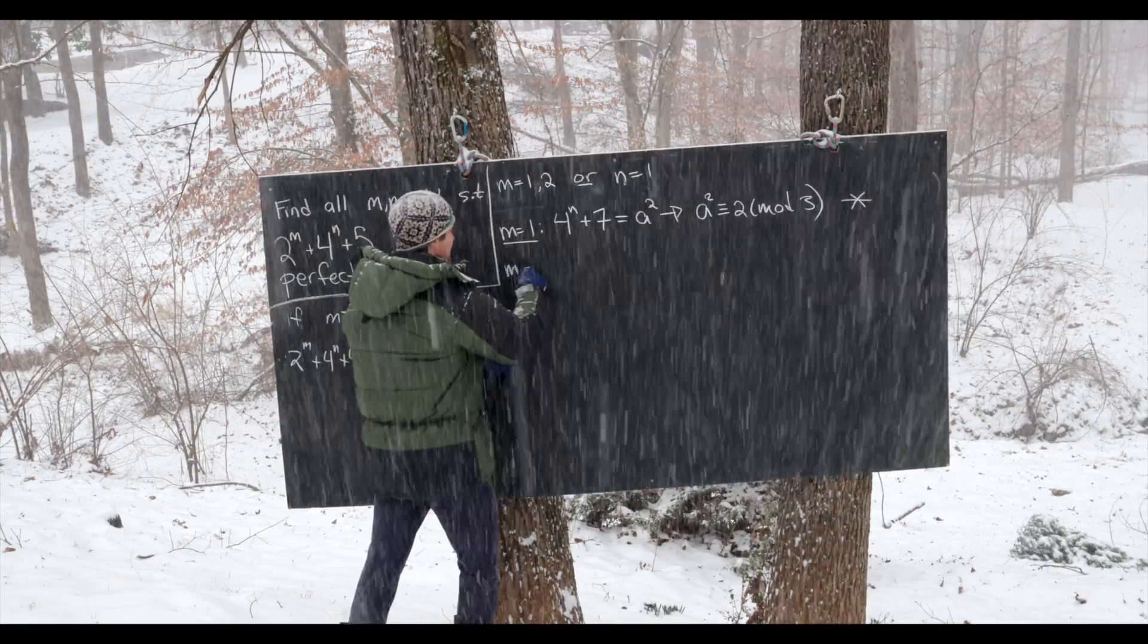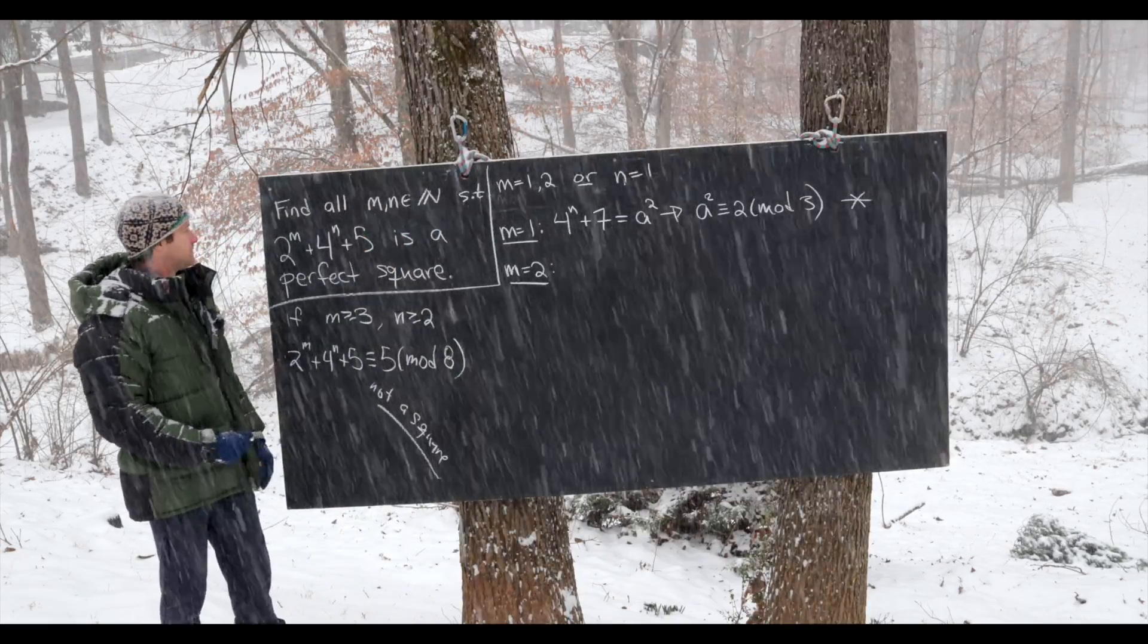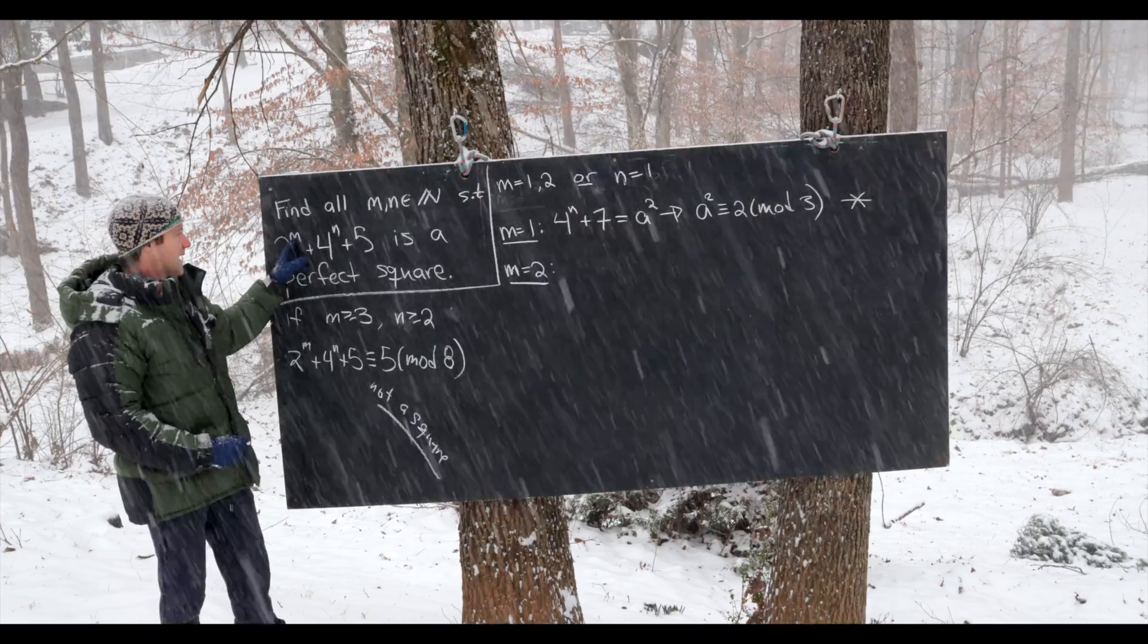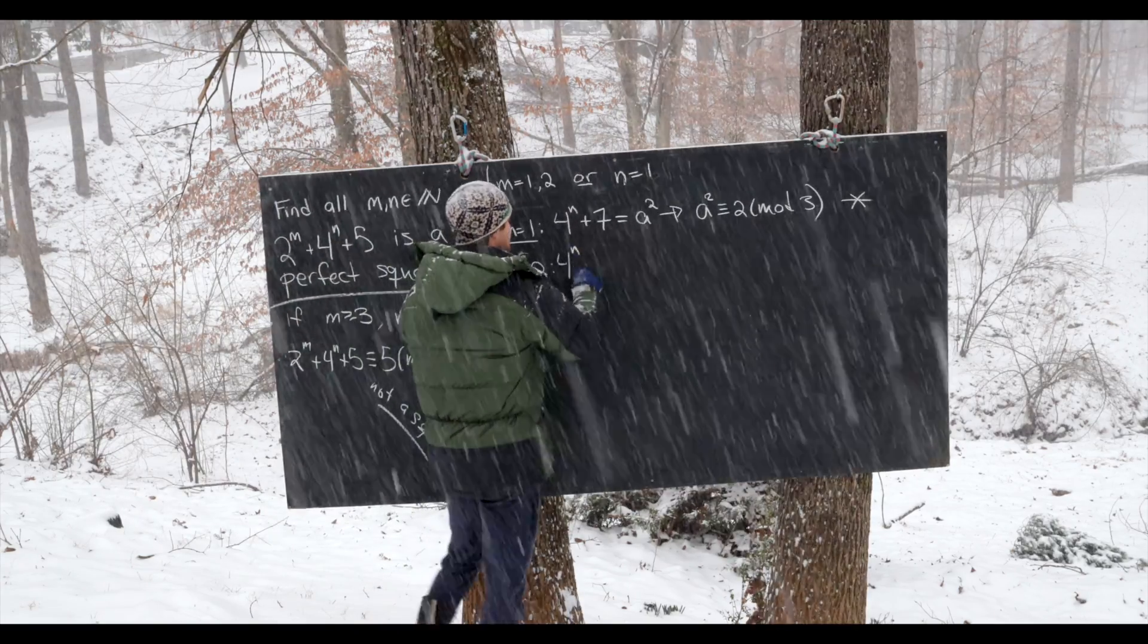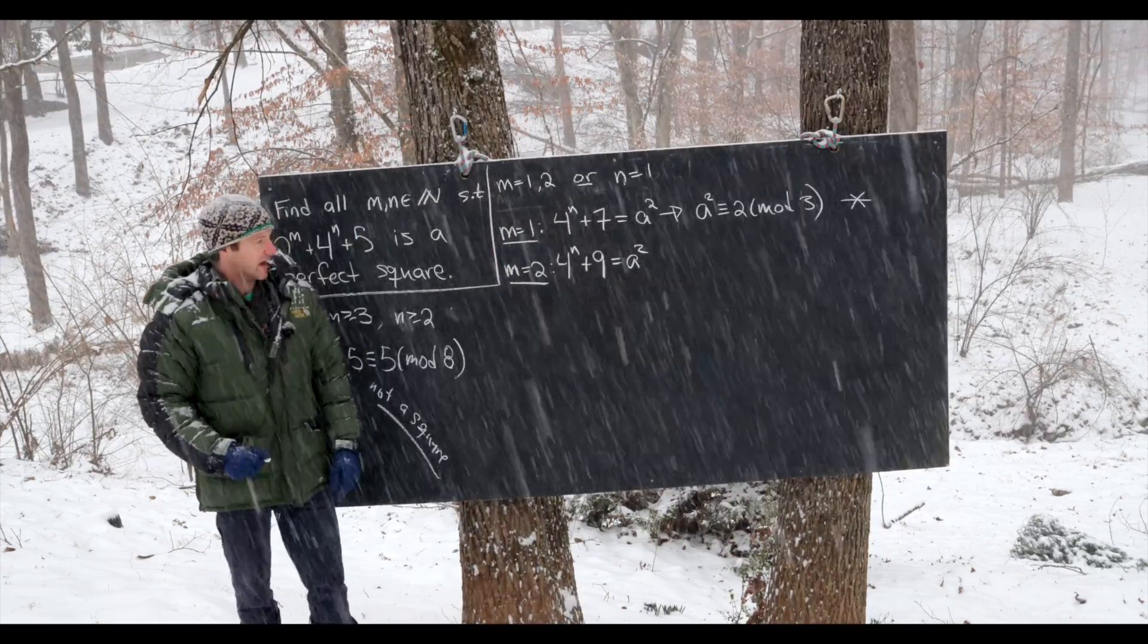So now let's move on to the case when m is equal to 2 and see what happens. So if m is equal to 2, we have 2 squared plus 5 is 9. So that means we have 4 to the n plus 9 is a perfect square like that.